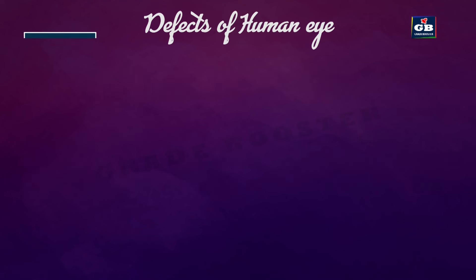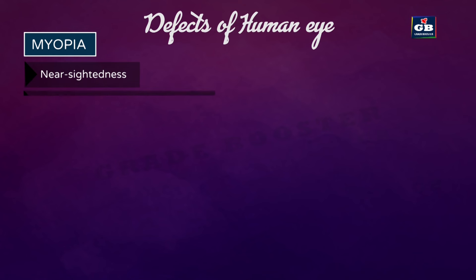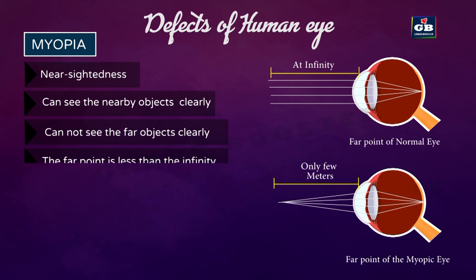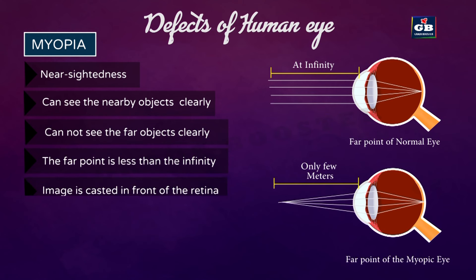Myopia, also called nearsightedness: persons with this defect can see nearby objects clearly but cannot see far objects clearly. For a normal eye, the far point is infinity, but for myopic persons the far point is less than infinity — only a few meters. So if any object is beyond that limit, they will not be able to see it clearly.